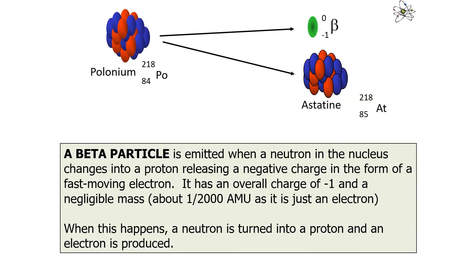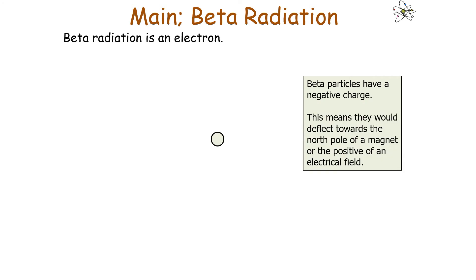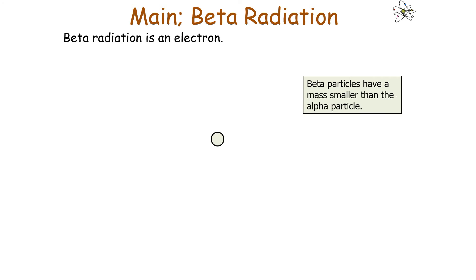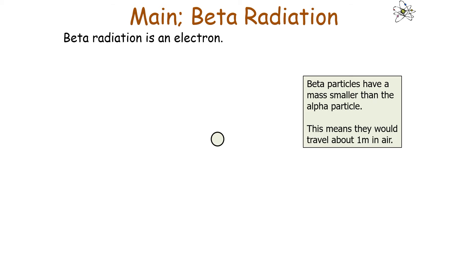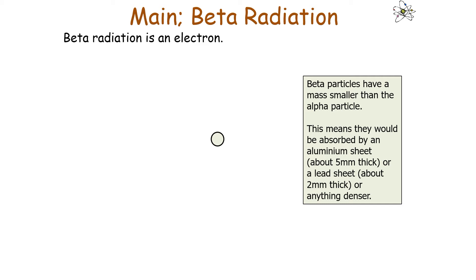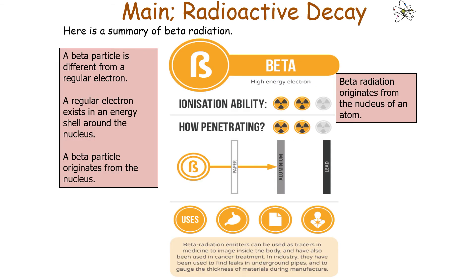In beta emission, a beta particle is emitted when a neutron in the nucleus changes to a proton and releases a negative charge in the form of a fast-moving electron. Beta particles have a negative charge, which means they deflect towards the north pole of a magnet or the positive of an electrical field. Beta particles have a mass smaller than an alpha particle, which means they actually deflect more in a magnetic or electrical field than alpha particles. They are moderately ionizing, travel about one metre in air, and are absorbed by an aluminium sheet, lead sheet, or anything denser. Beta particles have a quite high ionizing ability, quite high penetration, and can go through paper but are stopped by aluminium.